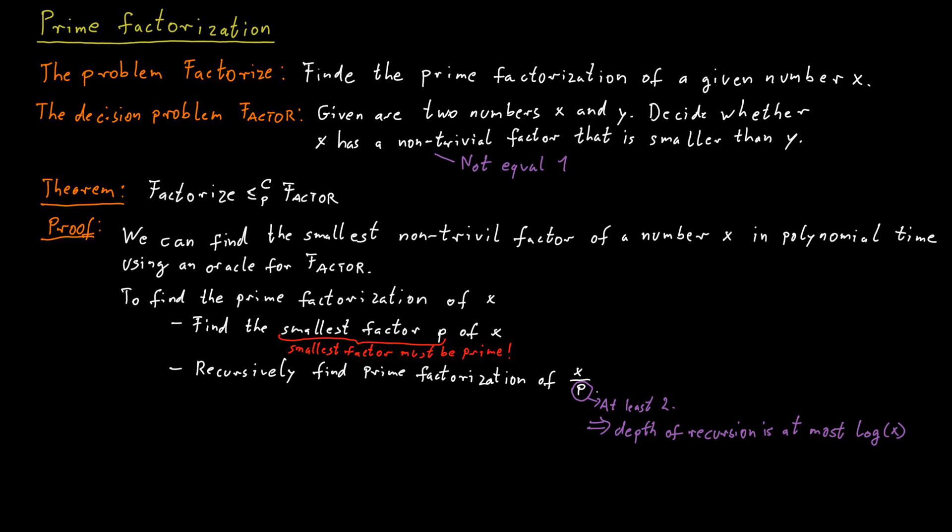Finding the prime factorization of a number is a fundamental problem. And we have now established that instead of thinking about that problem, we might as well just think about the decision problem factor instead. This is because we have self-reducibility here. I claim that this problem factor is contained in NP and is also contained in co-NP. So it's contained in the intersection of NP and co-NP.